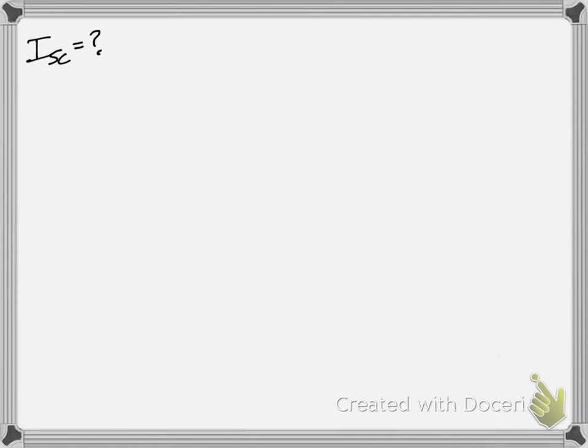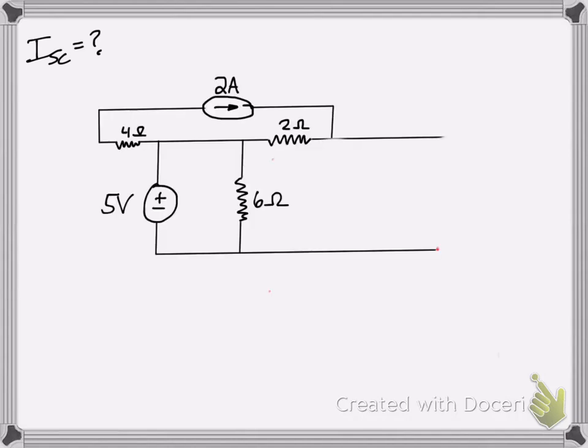Next, to find the short circuit, the current through the short circuit, so you draw the same thing, except now you have a short circuit rather than an open circuit, and you're trying to find the current through that. So all you've got to do, keep in mind of that 2 ohm resistor again, it's going to come up again.